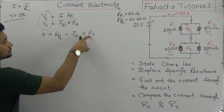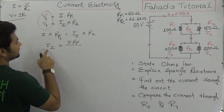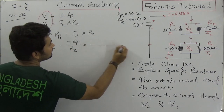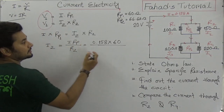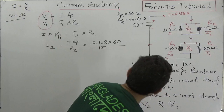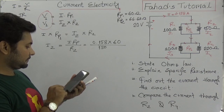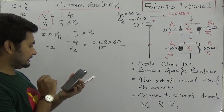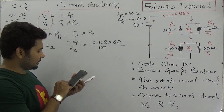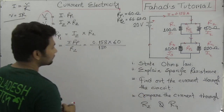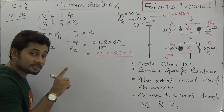Calculating I2: I is 0.158, Rp1 is 60, and R2 is 150 ohms. So I2 = 0.158 × 60 / 150 = 9.48 / 150 ≈ 0.0632 amperes. That is the current passing through R2.